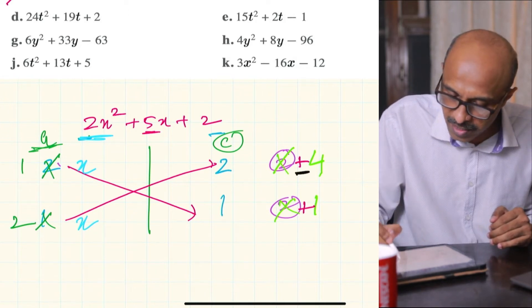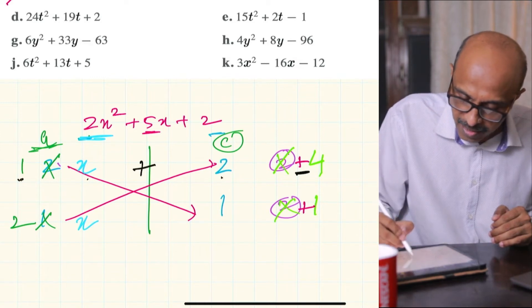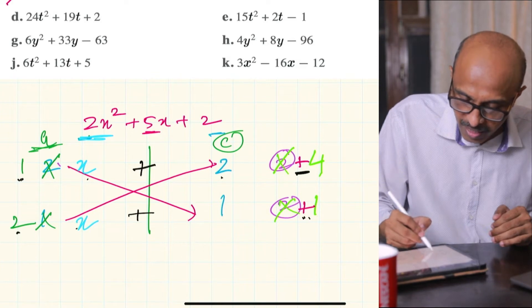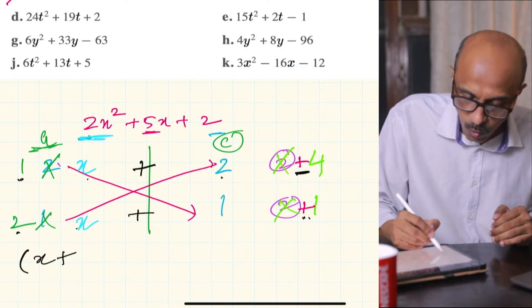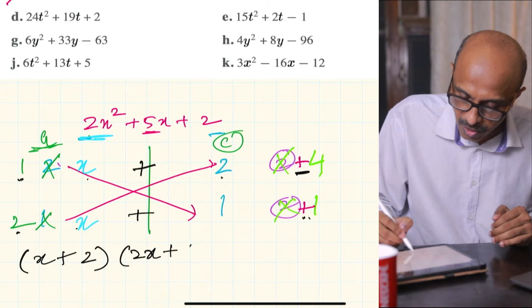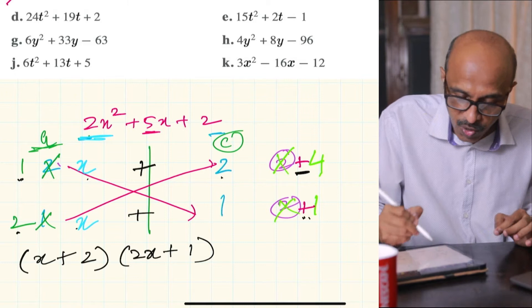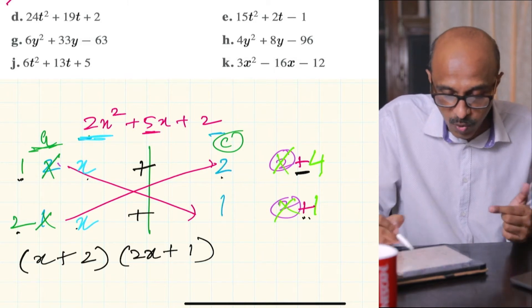Plus 4 and plus 1 which will give you 4 plus 1 equal to 5, and that sign that you've entered here, that's the sign that's going to combine this factor, this 1x and the 2. The same sign that you have here is going to combine this 2x plus 1. So the factors are x plus 2 and 2x plus 1.